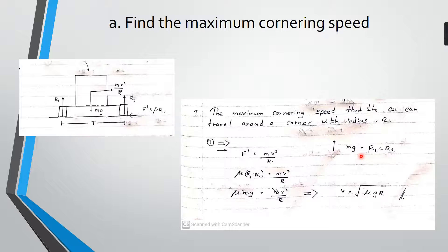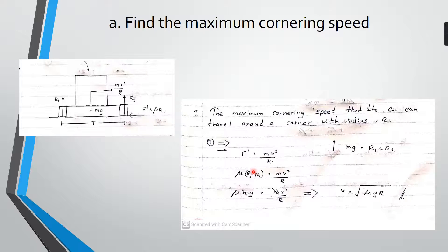Let's go to the first part. We have to find the maximum cornering speed. We did the same type of question last time. Here is my sketch with all forces marked. First we need to divide all forces into vertical and horizontal axes. In the horizontal direction we have only friction force and centrifugal force, and the friction force is equal to the centrifugal force.